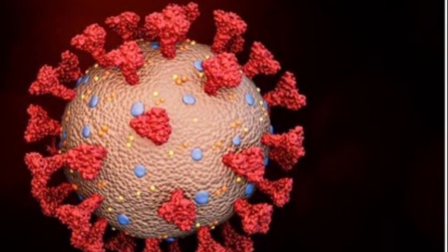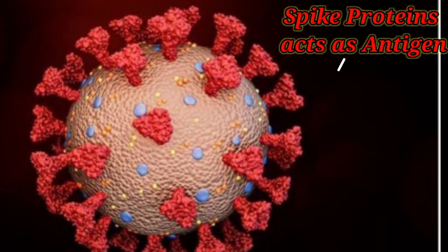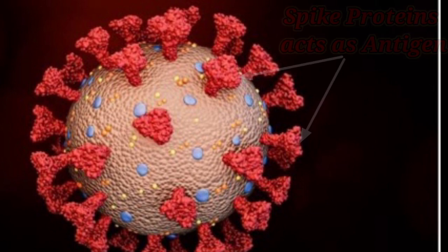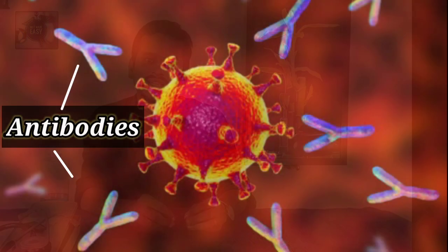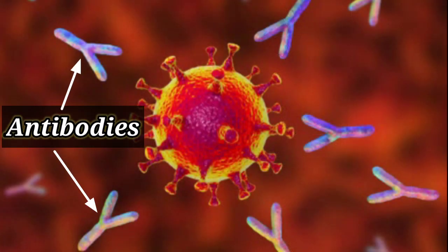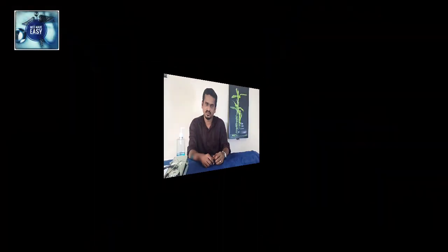In the case of COVID-19 virus, the spike protein acts as the antigen and the body produces antibodies against it. These antibodies in turn directly fight against these viruses. Now let us know how vaccines work.